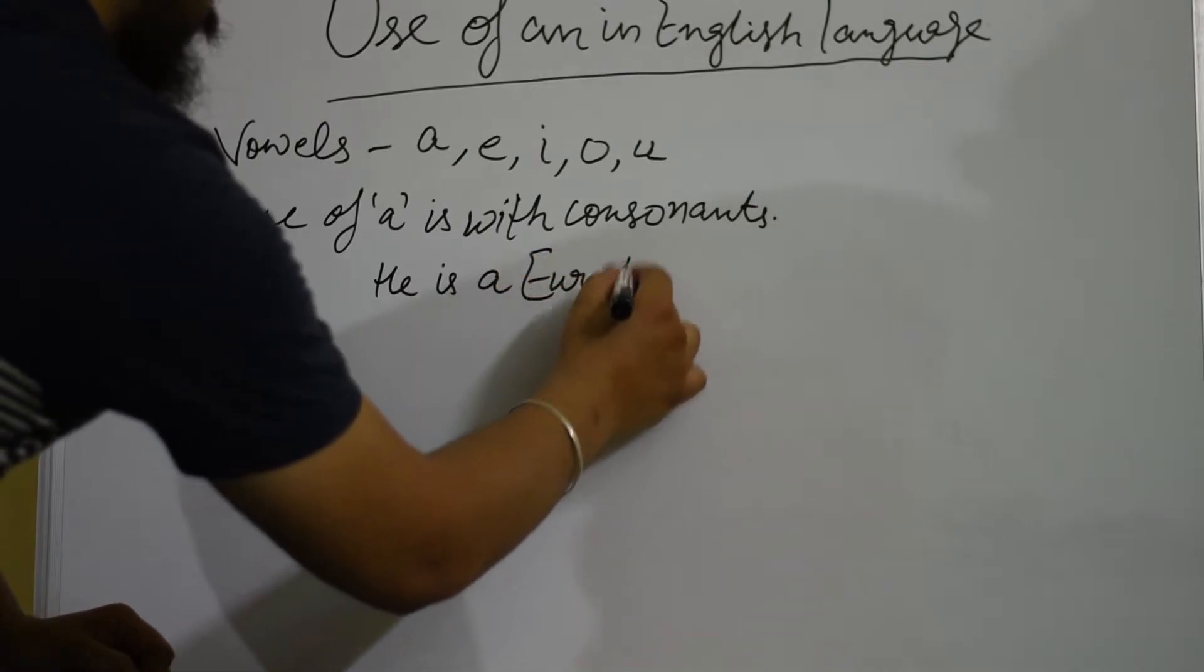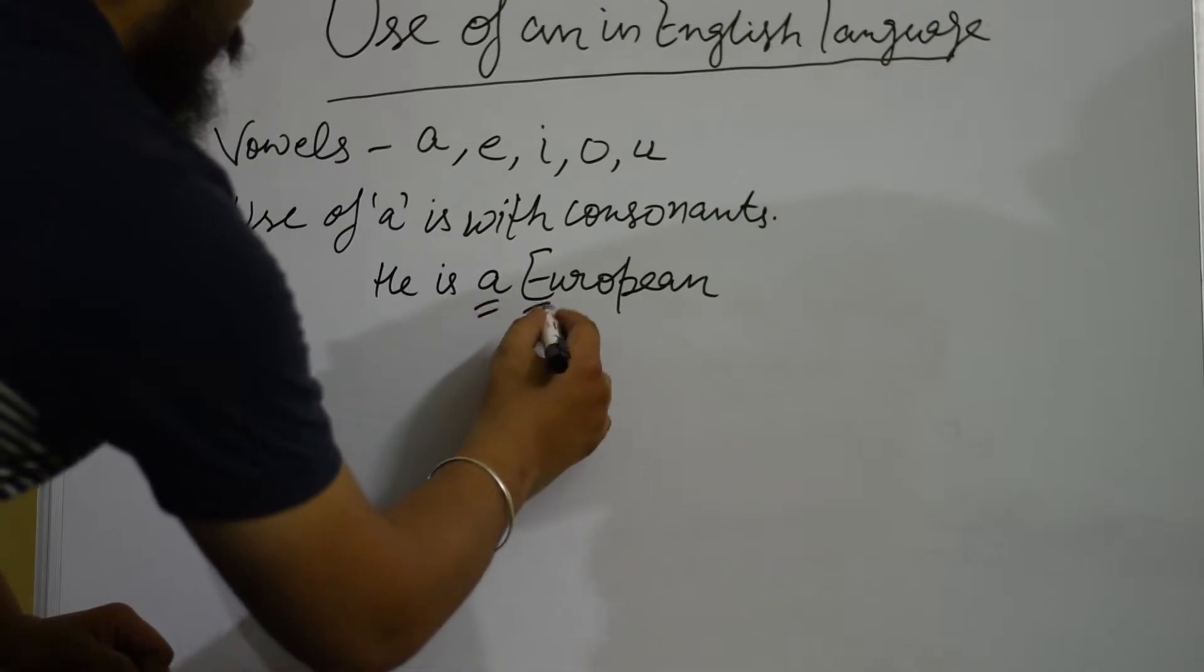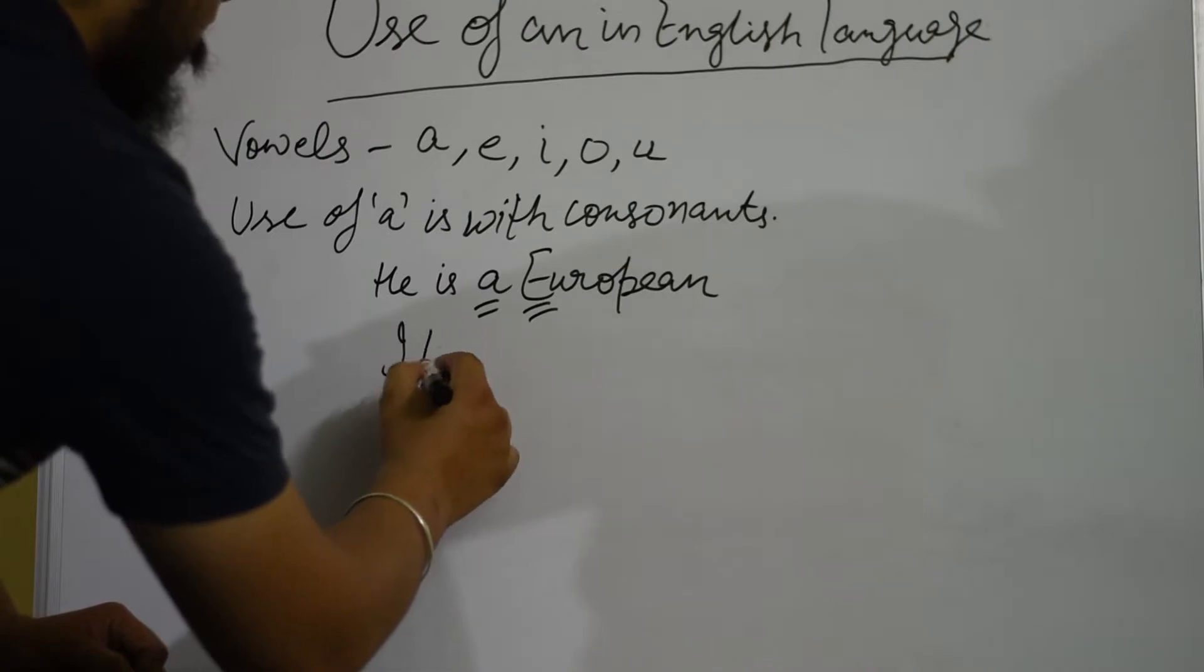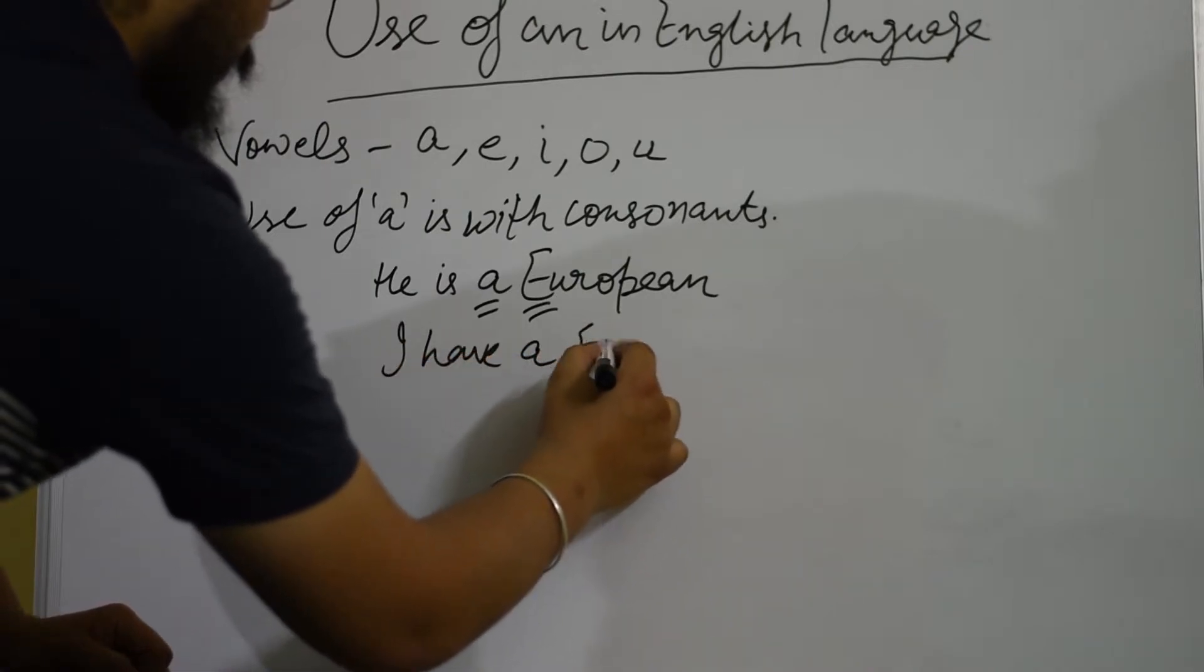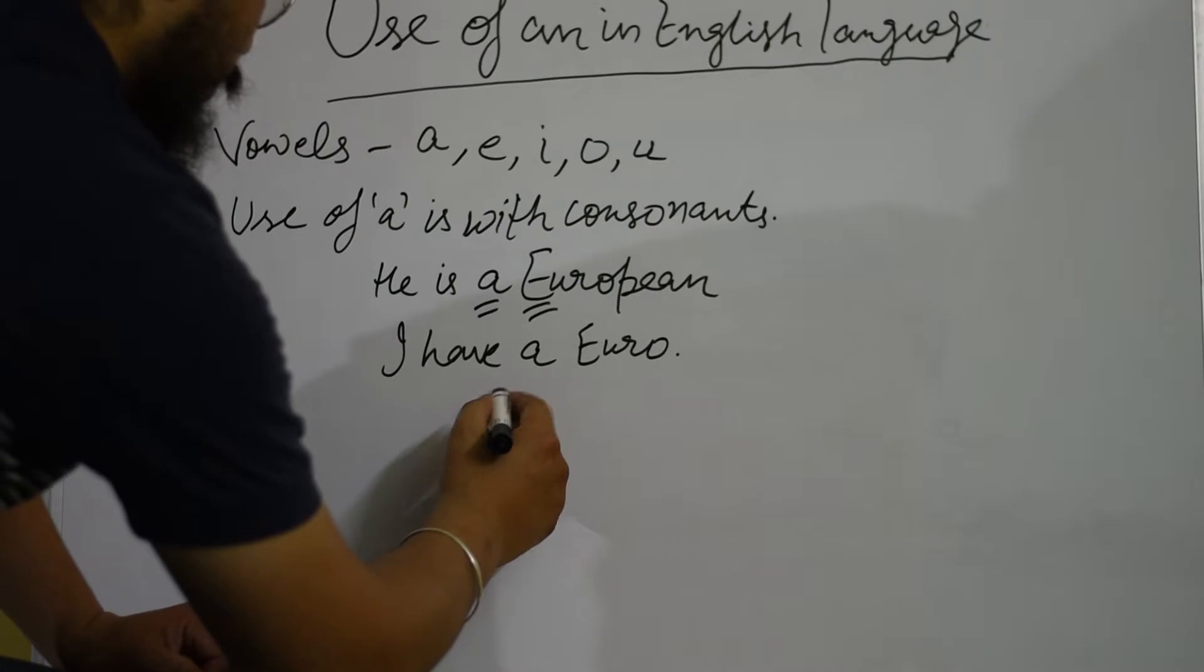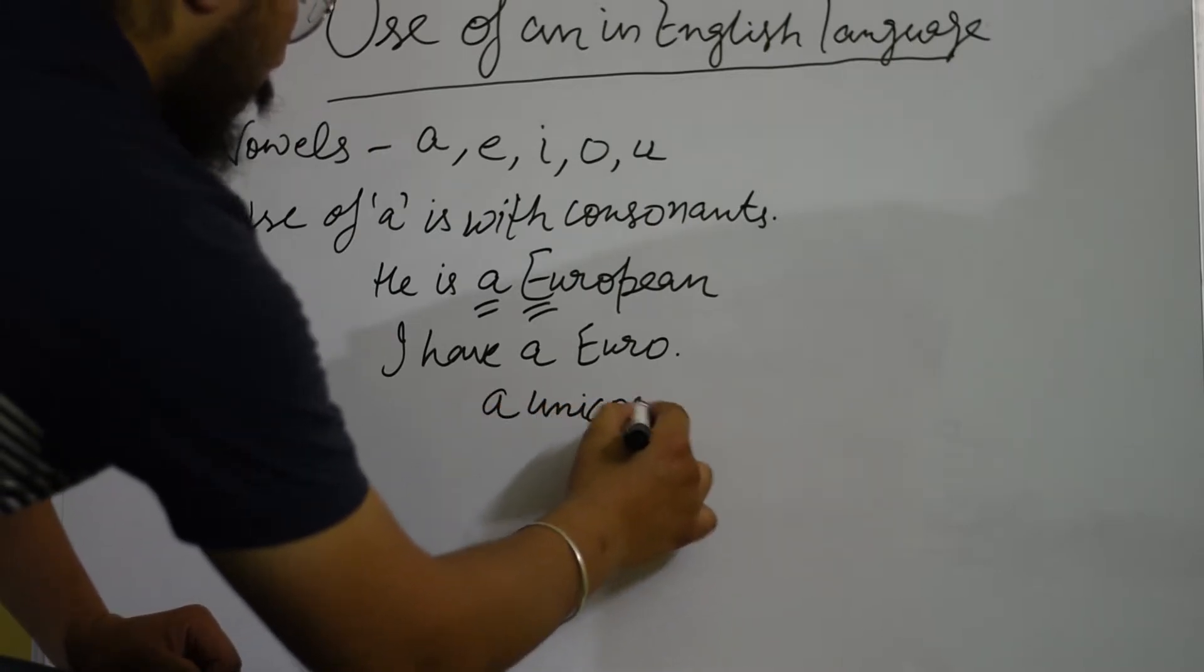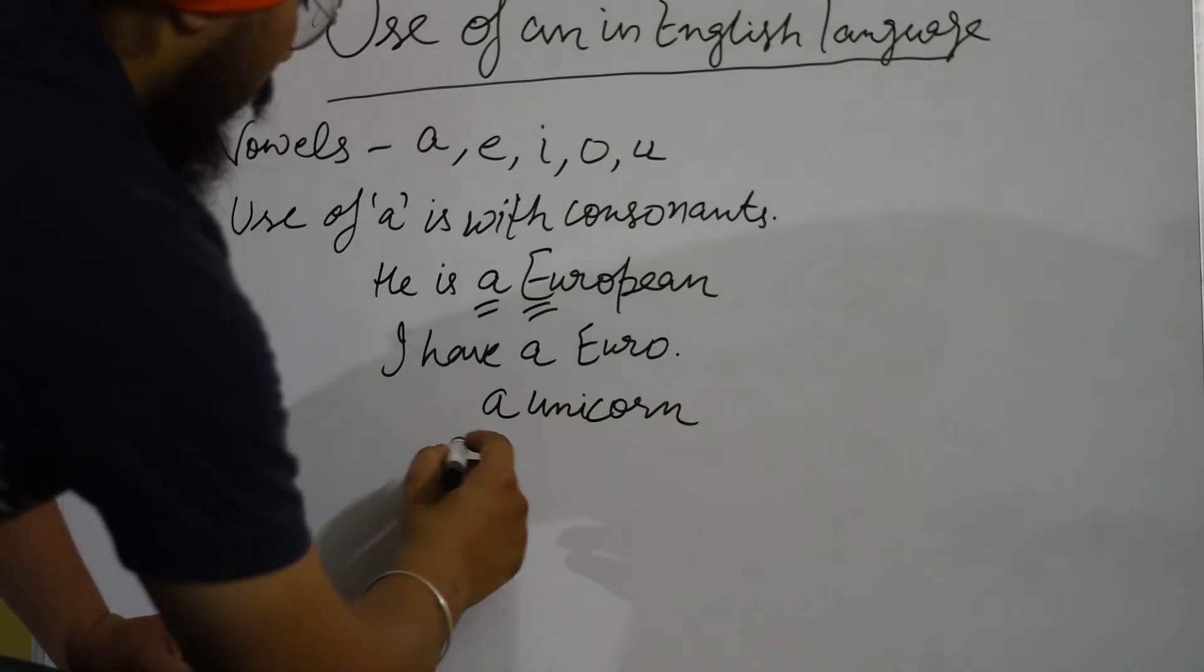Similarly, in another sentence, 'I have a euro', and in words like 'a unicorn' - for example, 'there is a unicorn' or 'it is a unicorn'.